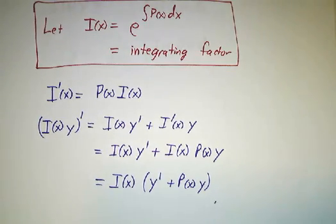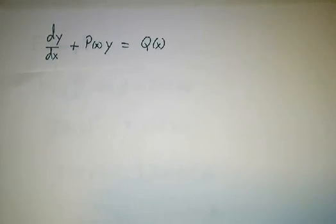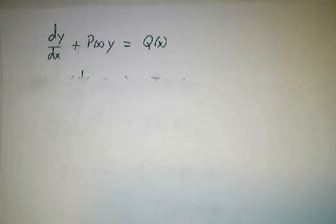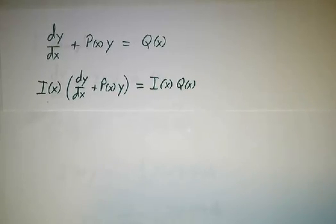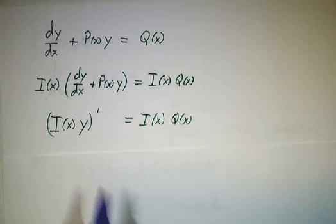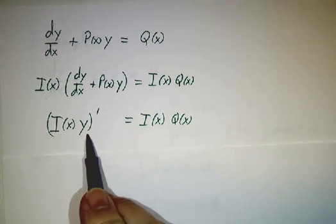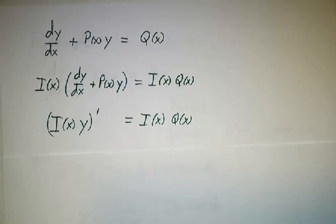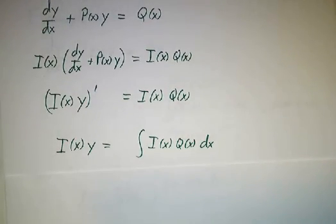So this gives us our technique for solving the differential equation. We start off with our differential equation. We multiply both sides by i. We notice the left-hand side is the derivative of i times y. And then all we have to do is integrate both sides.